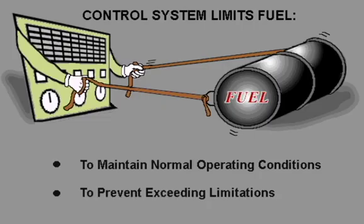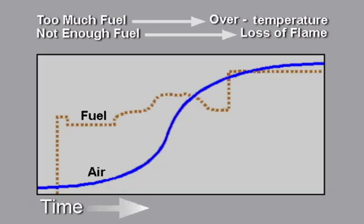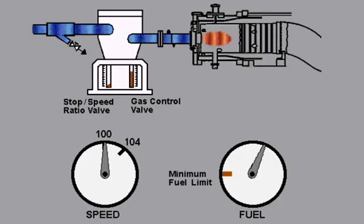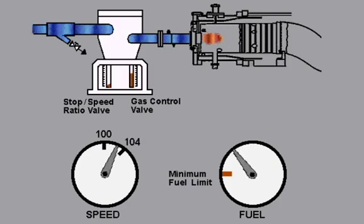The control system must limit the amount of fuel entering the turbine in order to maintain normal operating conditions and to prevent exceeding the limitations. The amount of fuel needs to be limited to ensure a proper fuel-air mixture across the range of operation. Too much fuel results in over-temperature. Not enough fuel results in loss of flame in the combustors. When there is an upset in the control system, the fuel supplied to the combustors won't drop below the minimum fuel limit, also known as minimum blowout fuel.